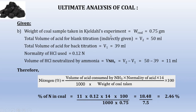For percentage nitrogen: weight of coal = 0.75 g; volume for blank titration = 50 ml; volume for back titration = 39 ml; normality = 0.12. Volume of acid neutralized by ammonia = 50 − 39 = 11 ml. Percentage nitrogen = 11 × 0.12 × (14/1000) × (100/0.75) = 2.46.